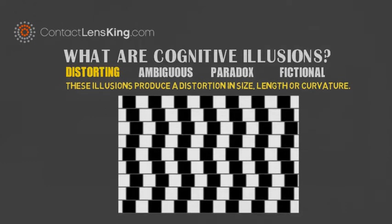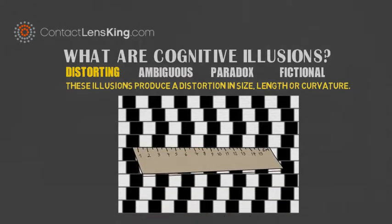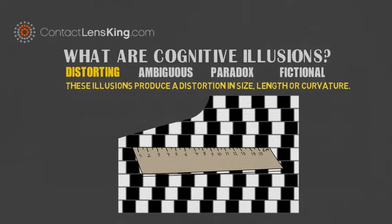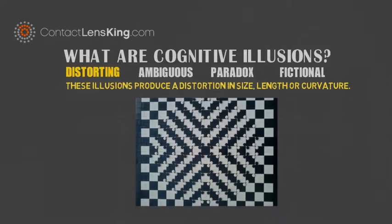For instance, in this first image, are the horizontal lines perfectly straight? Let's add a ruler and find out. In this next image, does the center of this checkered board seem curved?